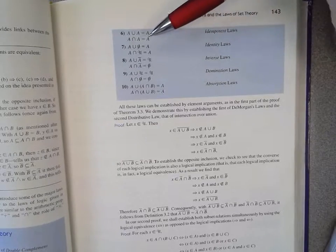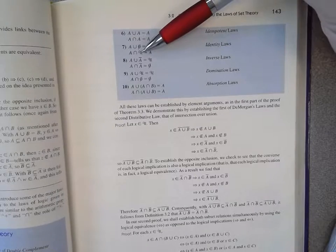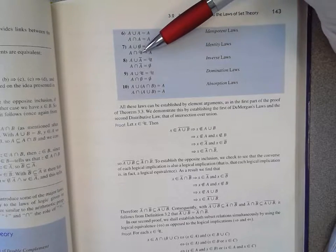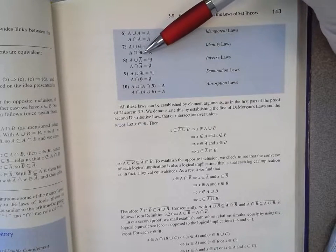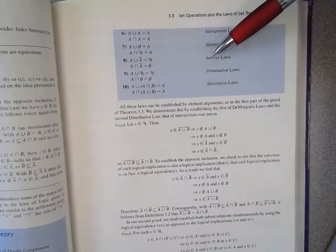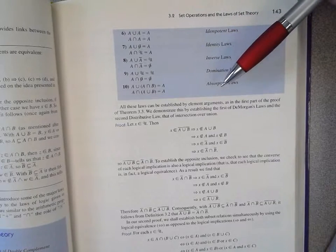And the identity law, you can put it together with a fallacy or you put it together with a tautology. That's what we saw with sets, inverse law, domination, and absorption.